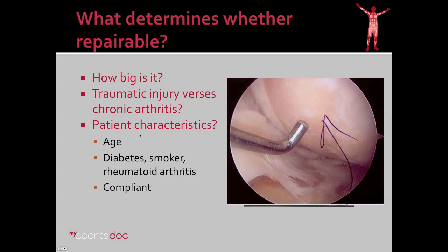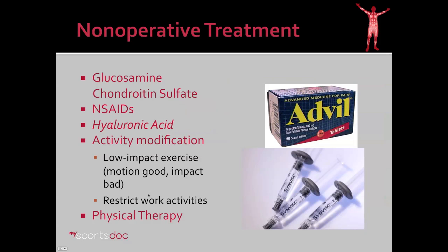Patient characteristics are very important. Often people don't realize that a patient's age is important in how we treat cartilage injuries, as well as whether or not they have diabetes, whether they smoke, or have rheumatoid arthritis or other inflammatory conditions. The patient also has to have the ability to be compliant with the post-operative protocol. For non-operative treatments, glucosamine chondroitin sulfate has been proven to be as effective as some prescription anti-inflammatories in treating knee pain from cartilage injury or arthritis.